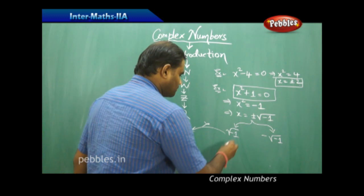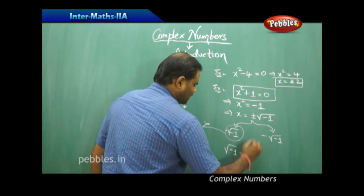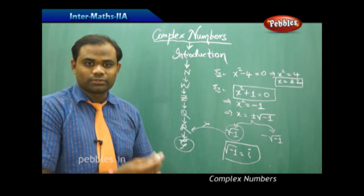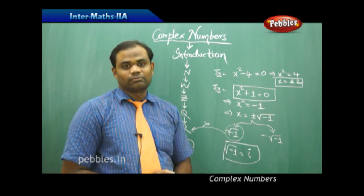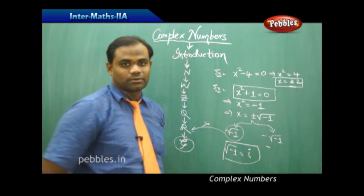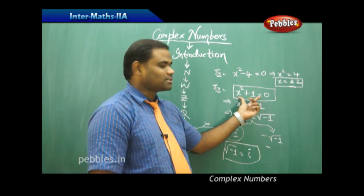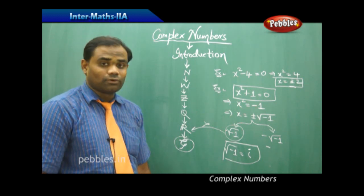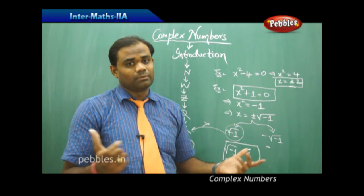We denote √(−1) with i, and each complex number is generated from i. These are the complex roots, as opposed to real roots. There are many equations of this type in mathematics, and therefore finding complex roots is equally important for a given polynomial.